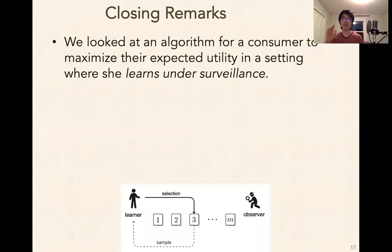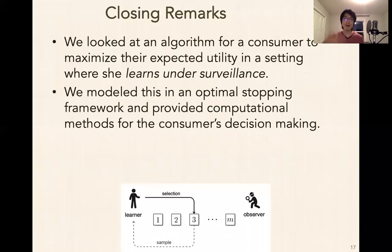So I'm a little bit over time, so I just want to wrap up real quick. In this talk, we looked at an algorithm for a consumer to maximize their expected utility in a setting where she learns under surveillance. The idea is she's trying to collect more data while some observer is watching this process and potentially using that information to learn more. So that's the graphic we have at the bottom, this general problem of learning under surveillance. We have a learner making decisions in front of an observer and receiving some private samples while the observer is learning from the observations he's making. We were able to, by fixing the seller's strategy, we were able to put this in an optimal stopping time framework and provided some computational methods for the consumer's decision making. This is really only applicable in the settings where we view the seller as pre-committing to the strategy in a credible way that is known to the consumer in some way.